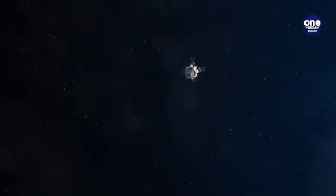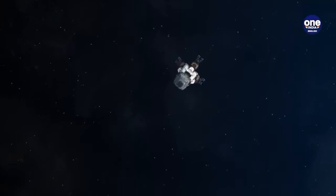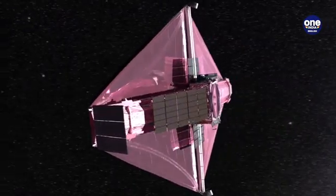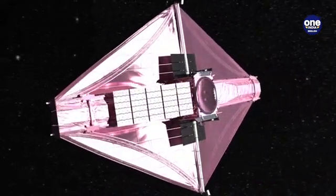The spacecraft will carry seven payloads to observe the photosphere, chromosphere, and the outermost layers of the Sun, the corona, using electromagnetic and particle and magnetic field detectors.